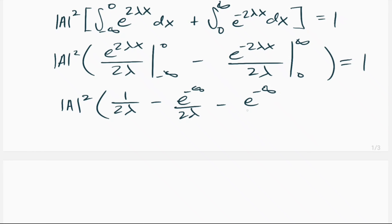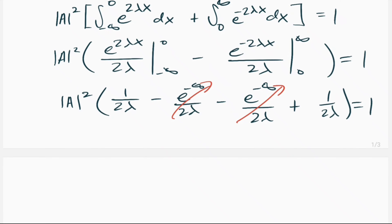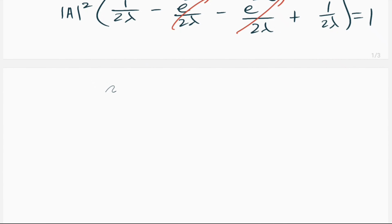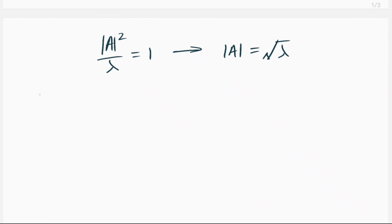When we evaluate the limits of integration, we get A² times [1/(2λ) minus e^(−∞)/(2λ) minus e^(−∞)/(2λ) plus 1/(2λ)] equals 1. The middle terms are clearly zero since e to the negative infinity is zero. We're left with A² times [1/(2λ) + 1/(2λ)] = A²/λ = 1, so the normalization constant A equals the square root of λ.